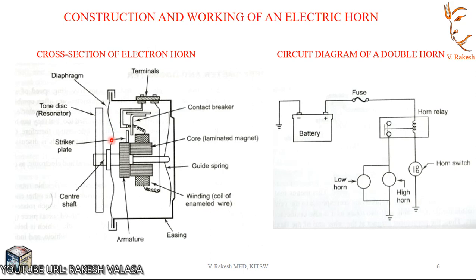It may be noted that two notes are produced in the horn — one is a deep note and another one is a high note. The deep note is produced by the low frequency of the diaphragm, approximately 15 to 20 amps. Modern automobiles use a relay in the horn circuit to provide a direct connection between the horn and the battery. The relay closes its contact to connect to the battery, and in this way the voltage drop in the circuit is minimized.